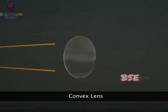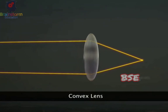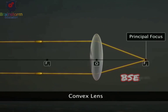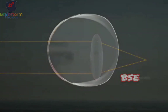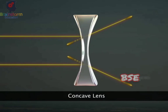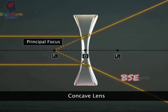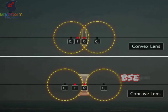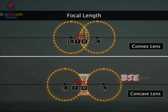The point at which rays parallel to the principal axis converge after refraction from a convex lens is called the principal focus of the convex lens. The point from which rays parallel to the principal axis appear to diverge after refraction from a concave lens is called the principal focus of the concave lens. A lens has two foci, one on each side, labeled F1 and F2. The distance between the optical center and the principal focus is called the focal length. The radius of curvature of a lens is twice the focal length.